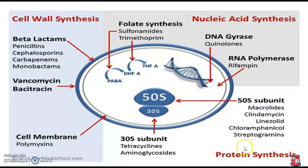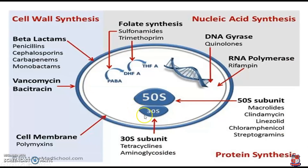The third variety is the protein synthesis inhibitors. Protein synthesis is the most critical material for bacterial development. Protein synthesis occurs specifically in the ribosomes, which contain a 50S subunit and a 30S subunit. Some drugs inhibit protein synthesis at the 30S ribosomal site — specifically tetracyclines and aminoglycosides. Aminoglycosides include gentamicin and streptomycin as the best examples.